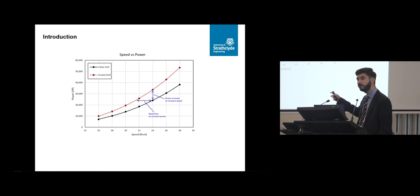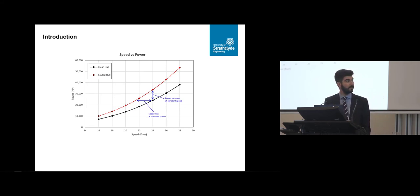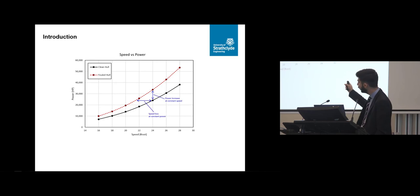But we need to really try and find or predict what's happening to the foul hull. So basically we have a new curve. What will happen if I have to have the same speed, I would either increase my power, which means I need to spend more money and I need to emit more greenhouse gas emissions. Or if I don't want to do that, I have to reduce my speed, which means I am late, so I'm losing money again.